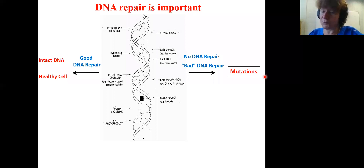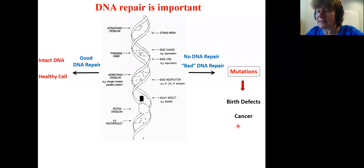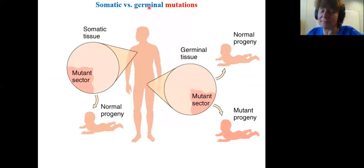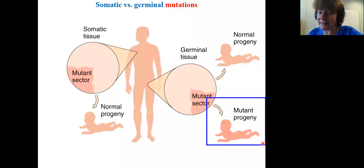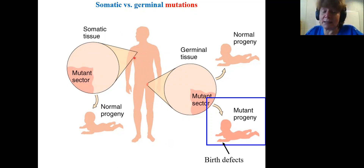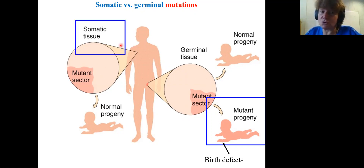Mutations can lead to either birth defects, which is a big problem if mutations happen in the germline, or mutations can lead to other problems and various diseases, for example cancer. Everything depends on where exactly mutations happen. In somatic cells of multicellular organisms, sometimes we do care, because some mutations lead to cancer and that's a big problem.